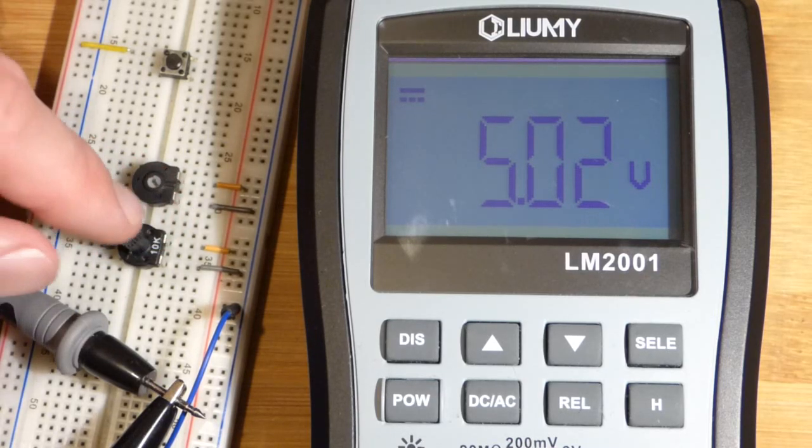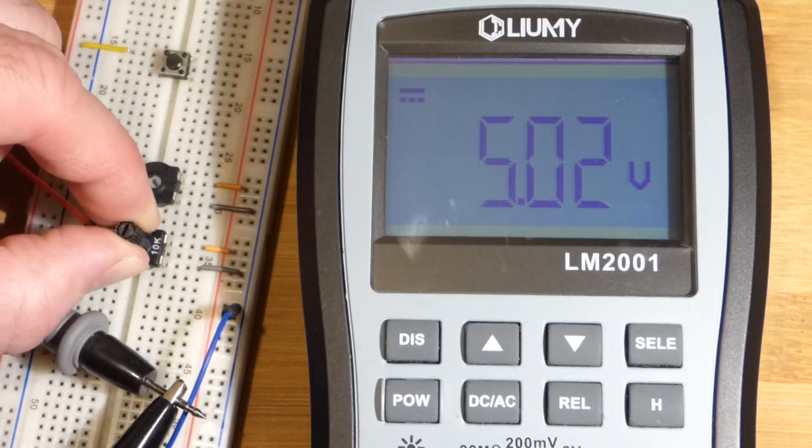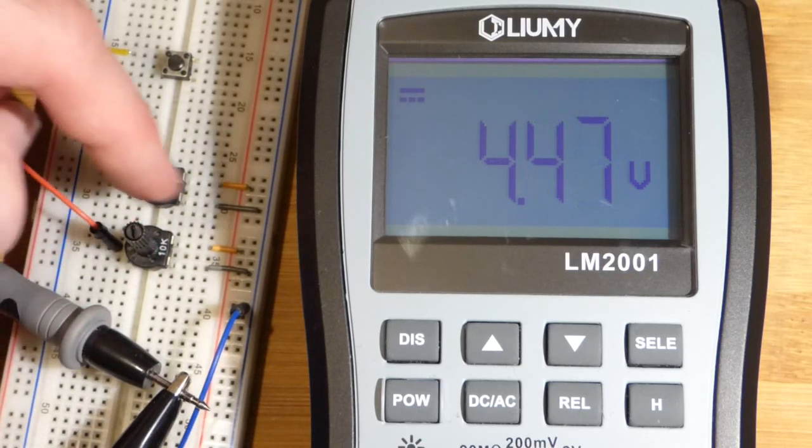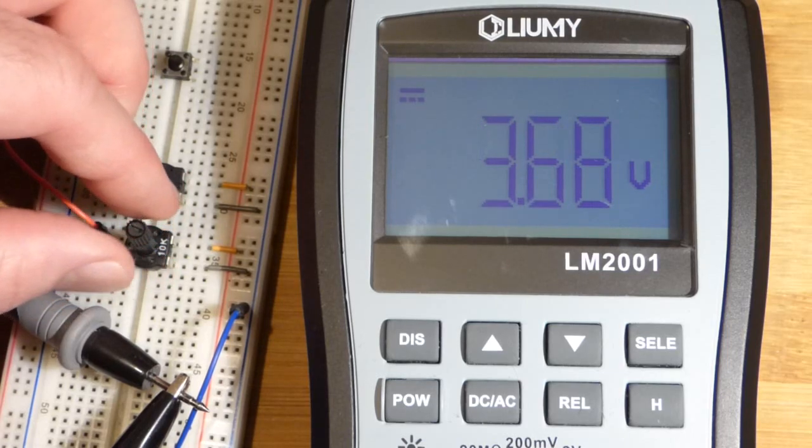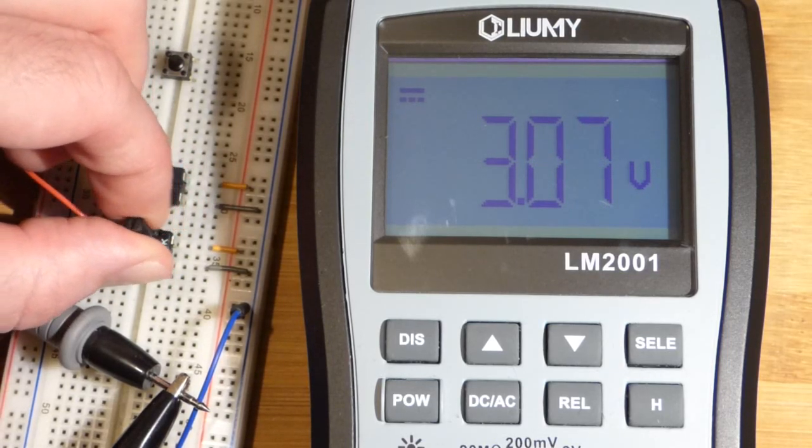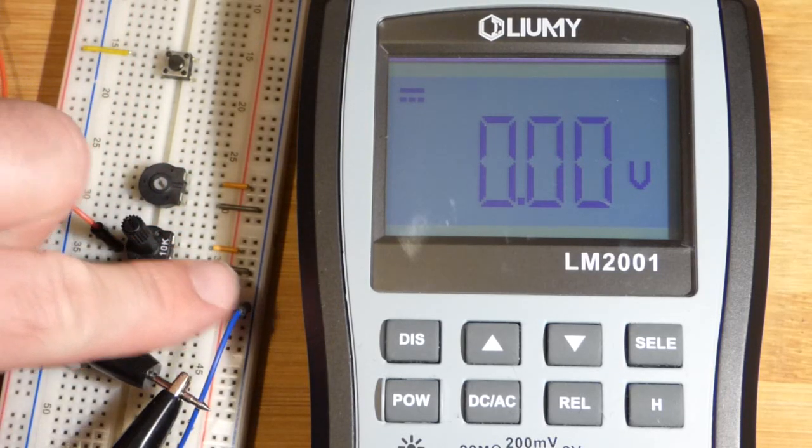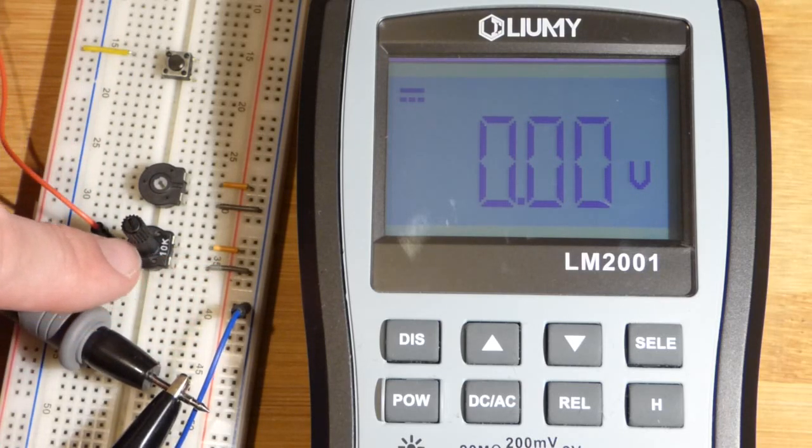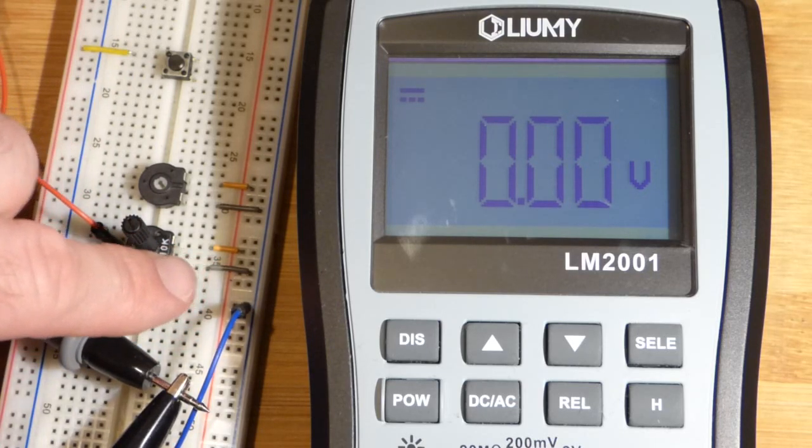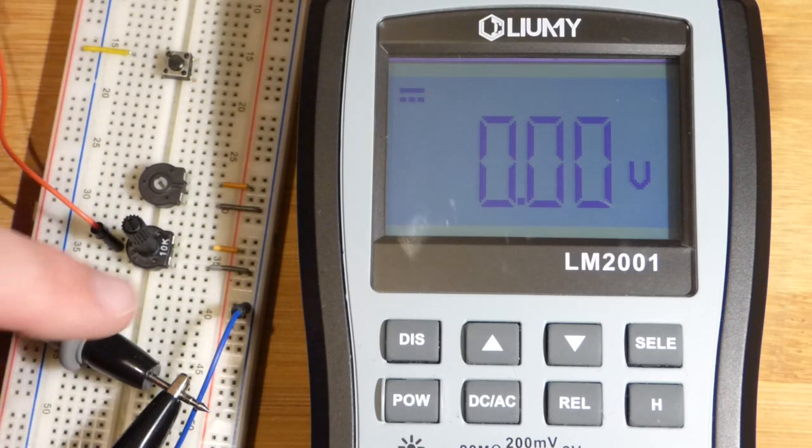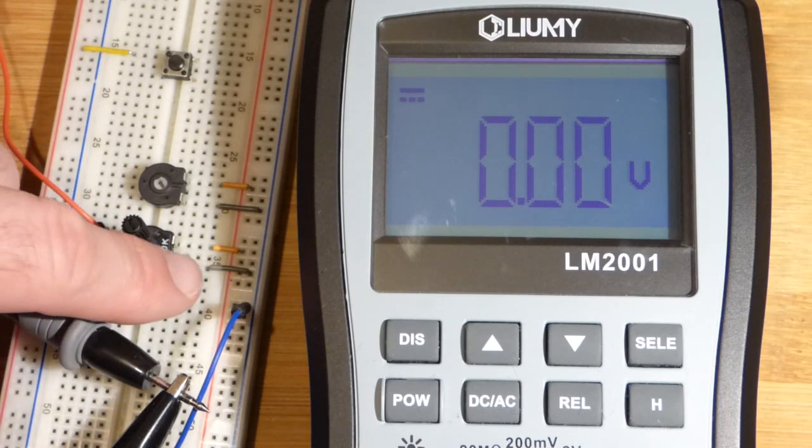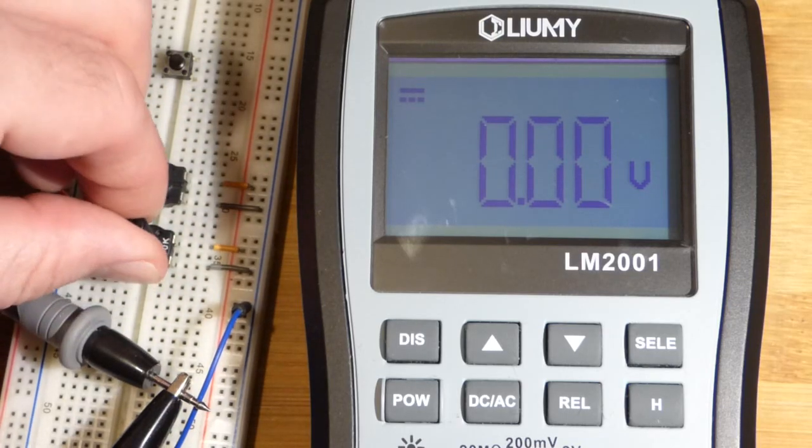But when we turn it this way, now there's more resistance to the positive side but less to the negative side. You can see that the voltage goes down. If we turn it all the way here, it's right to the negative rail. There's zero ohms of resistance to the negative rail, so there's no way this can push current from positive to negative right now. This is connected directly to there and we have zero volts.